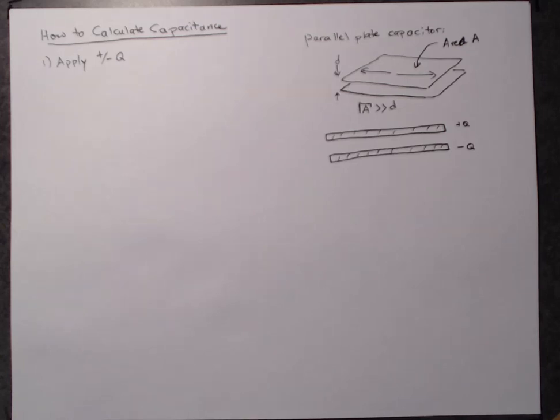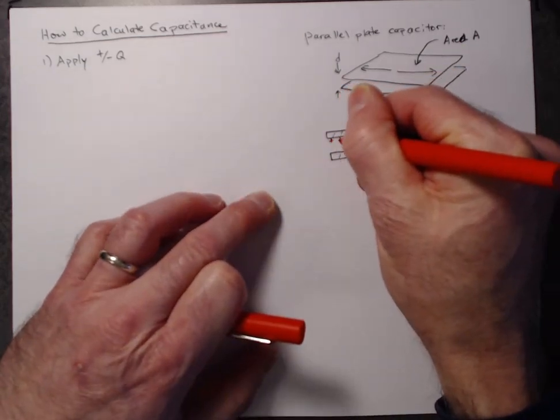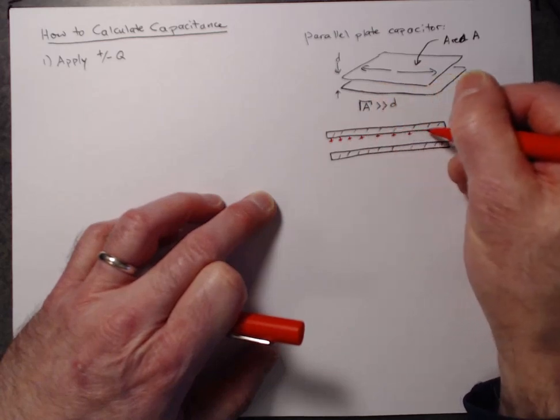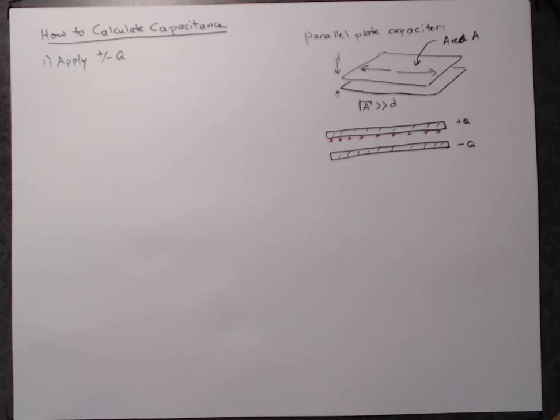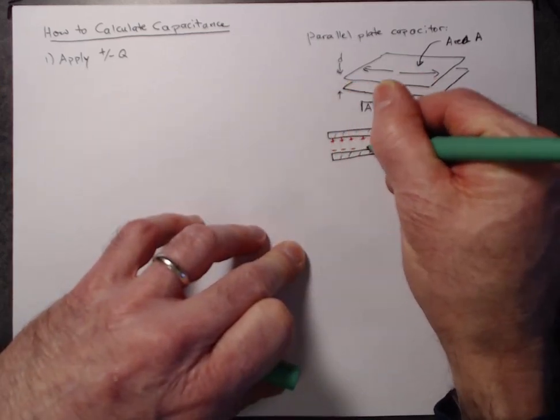Okay, so the charges are going to be attracted to each other, so they're going to get as close to each other as they can. So that means that the charge on the top plate will be on the bottom surface, like this, and the charge on the bottom plate will be on the top surface, like so.